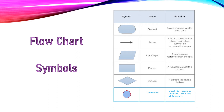Yeh hamare paas symbols hain. Pehla symbol ek oval shape hai — yeh START ya END ko bolte hain. Yeh oval shape hai, yeh START aur END ke liye — yaani program ko START karne ke liye hum yeh use karte hain, aur flow chart ko END karte waqt hum yeh symbol use karte hain. Is ka matlab ho gaya START ho gaya program, ya phir jab last pe dalte hain toh is ka matlab ho gaya khatam ho gaya.